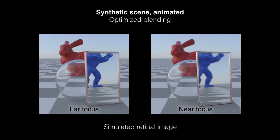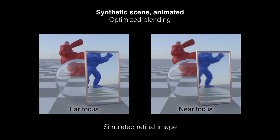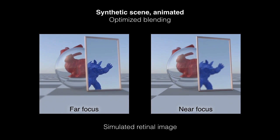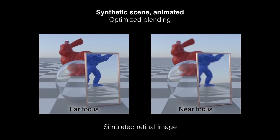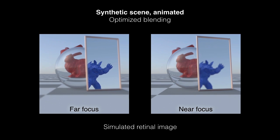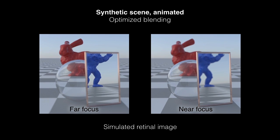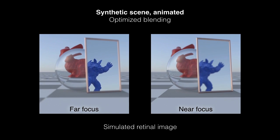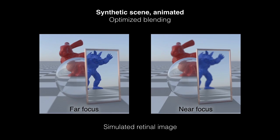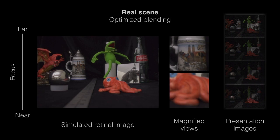The system also supports animation at up to 45 frames per second, and even though the frames are optimized independently, we get no temporal artifacts. Here we show simulated retinal images. On the actual display, the animation appears very high in quality to human viewers, but temporal aliasing between the camera and the monitor makes it difficult to capture a representative video.